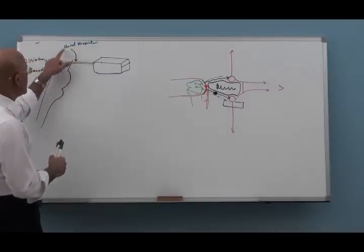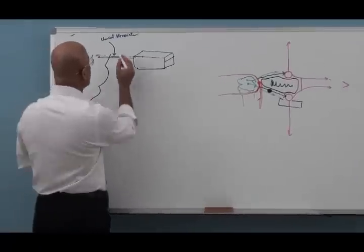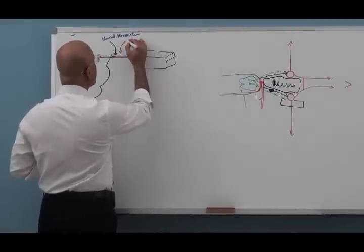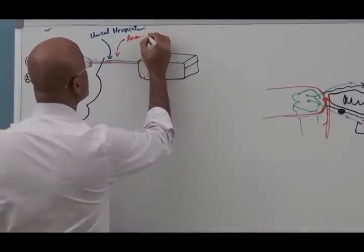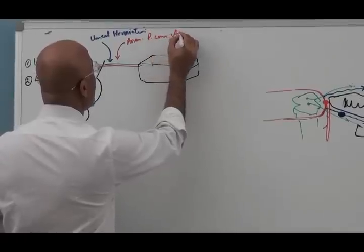In this area, there was uncal herniation, then we brought one more condition, what was that? Aneurysm of posterior communicating artery.